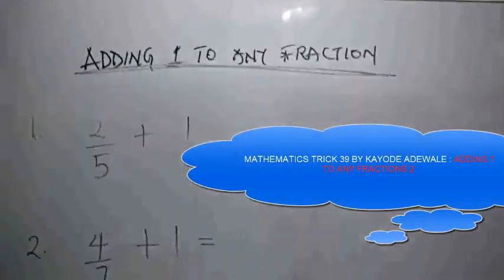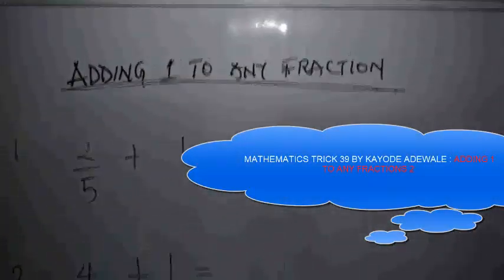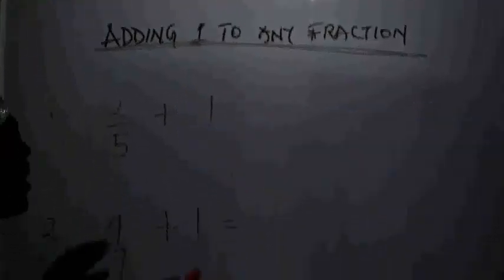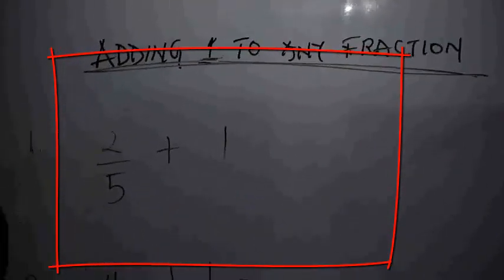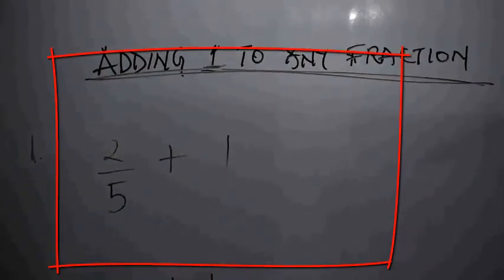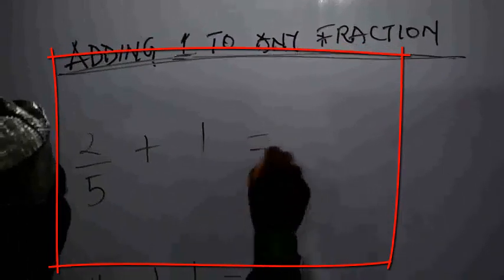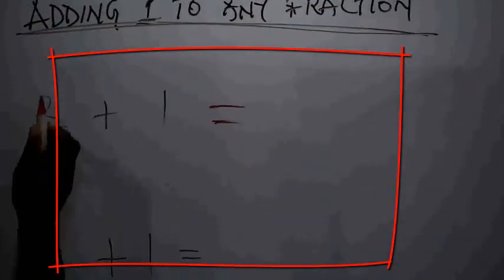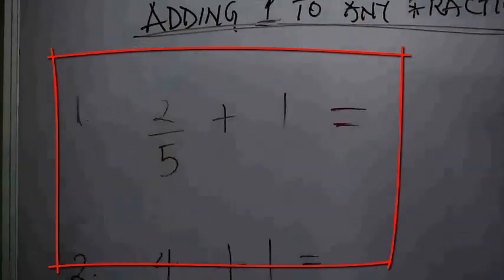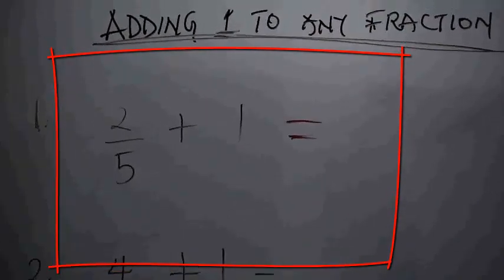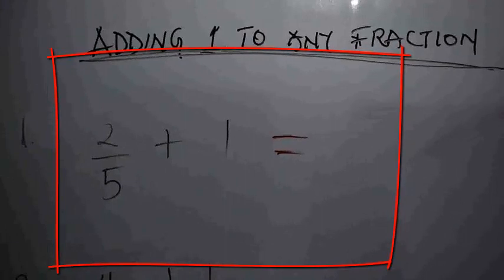Our topic is adding one to any fraction. As we all know, a fraction can be expressed as numerator over denominator. Every time you are asked to add 1 to any fraction, this trick will work for you. Let's take an example: 2 over 5 plus 1. You don't need to touch anything, just sum the numerator and denominator of that fraction.